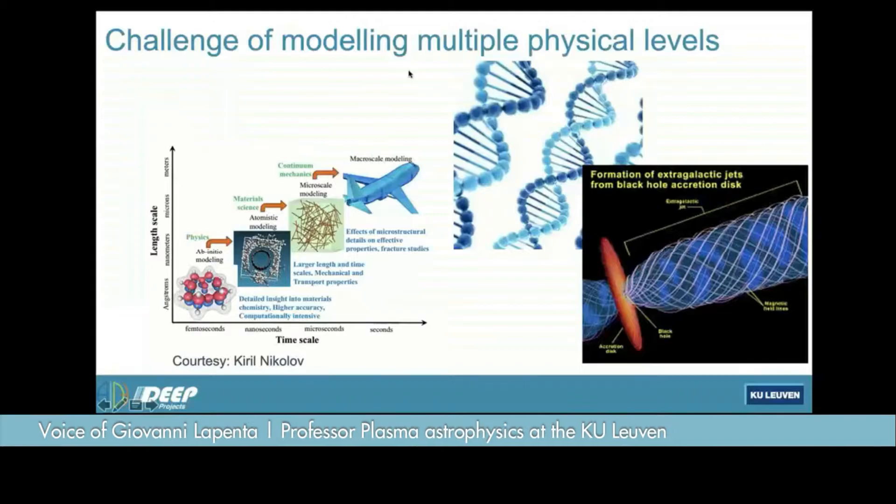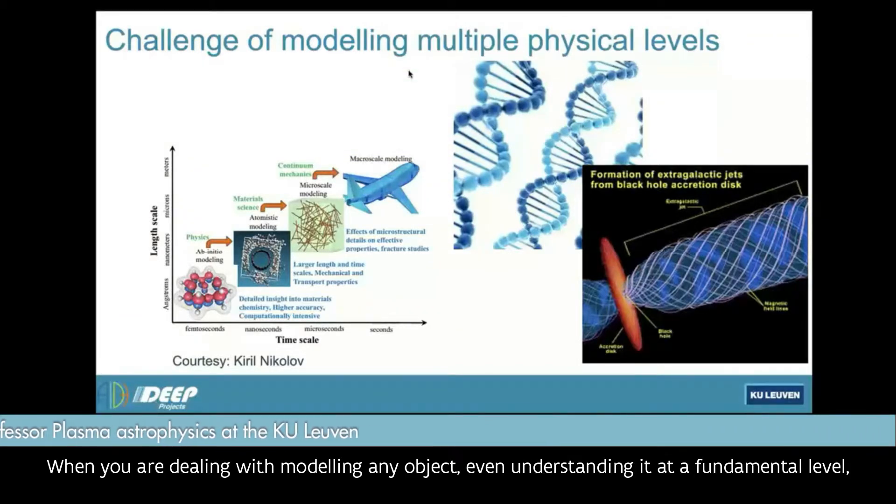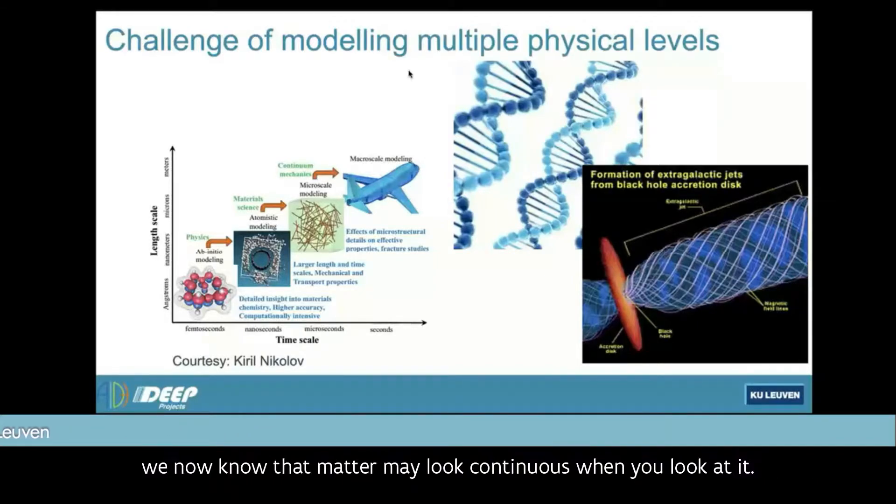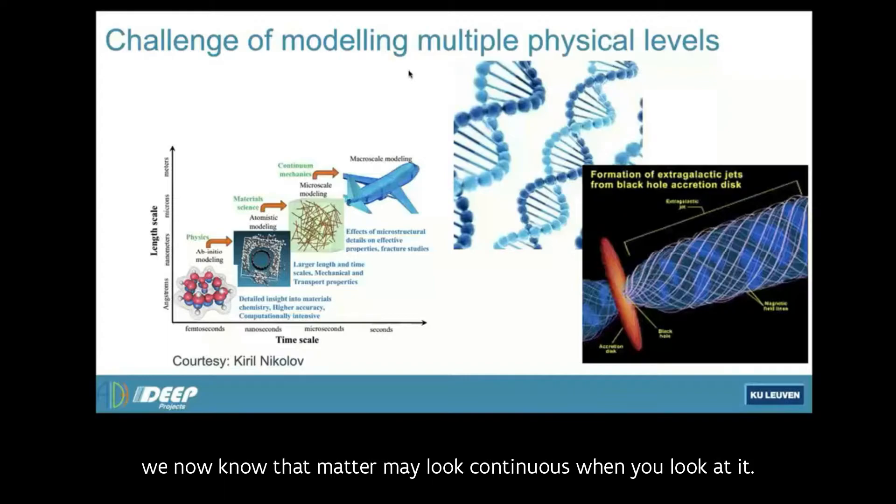When you are dealing with modeling any object, even understanding it at a fundamental level, we now know that matter may look continuous when you look at it. You may think that you can subdivide it further and further, but at some point we now know that you reach a situation where there are structures that cannot be further discretized.